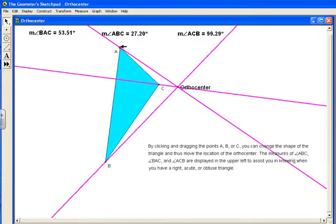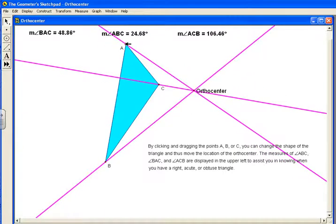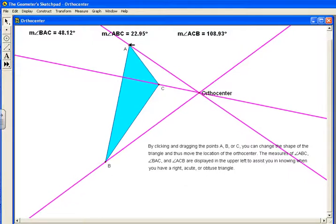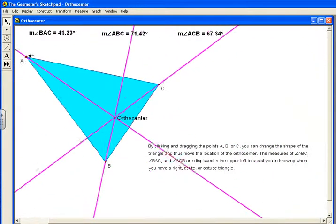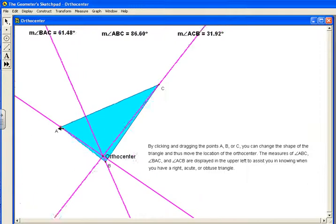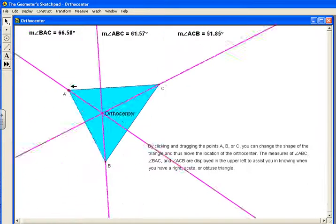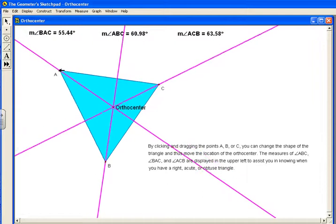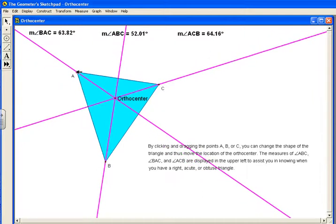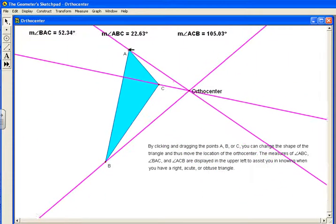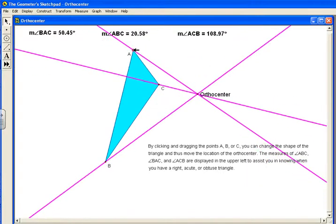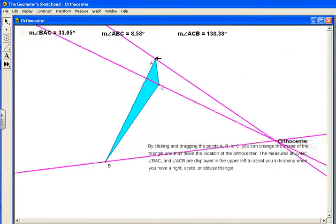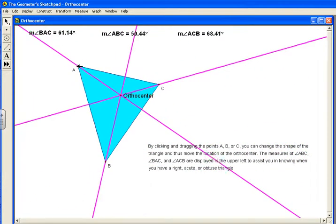In this case, C is now obtuse, and the orthocenter is relocated outside the bounds of the triangle. Whenever we get an obtuse angle—we can only have one because the sum of all the interior angles in a triangle is 180—so if we have anything over 90, the other two angles necessarily have to be acute angles less than 90 degrees. As we make these adjustments, we can see what happens to the orthocenter of the triangle.